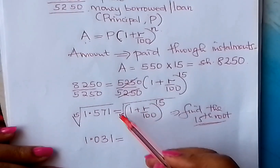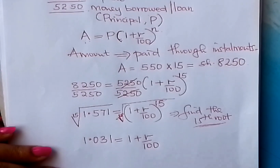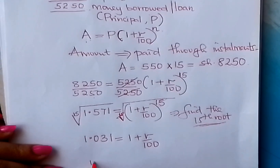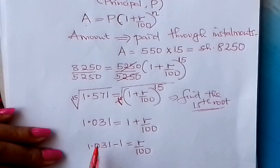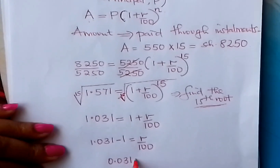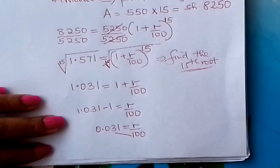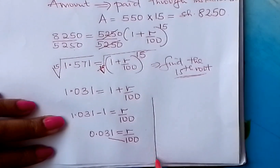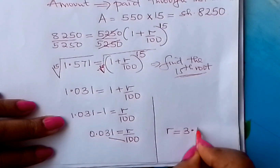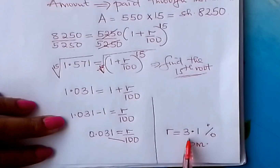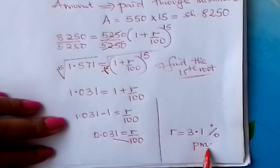1.031 equals the 15th root on this side — the power disappears, and you are left with 1 plus R over 100. So from there, how do you get your R? Take the 1 to the other side — it becomes minus — which equals R over 100. Subtracting, you will get 0.031, which equals R over 100. And therefore, finally cross-multiply, or multiply both sides by 100 to get your R. Your R, therefore, is 0.031 times 100, which gives you about 3.1% per month. This is the rate of compound interest per month.